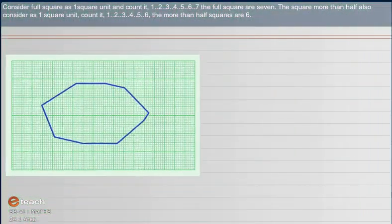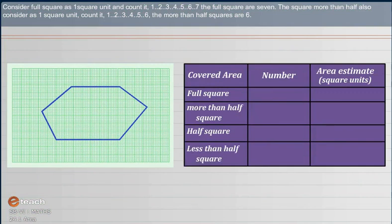Consider full square as one square unit and count it: 1, 2, 3, 4, 5, 6, 7. The squares more than half also consider as one square unit. Count it as 1, 2, 3, 4, 5, 6. The more than half squares are 6.